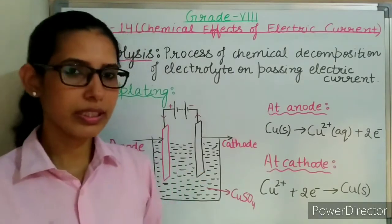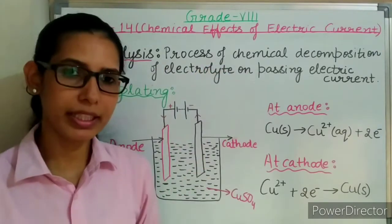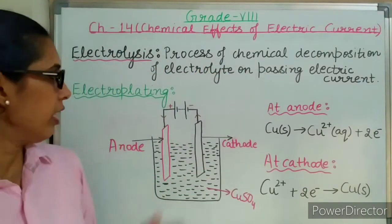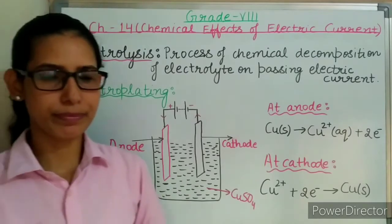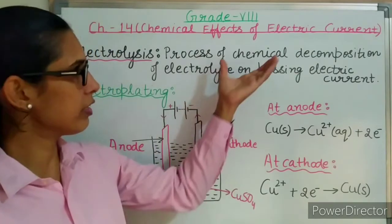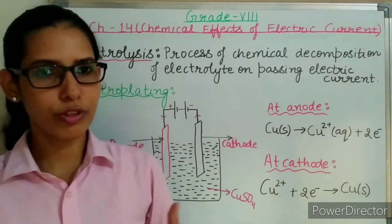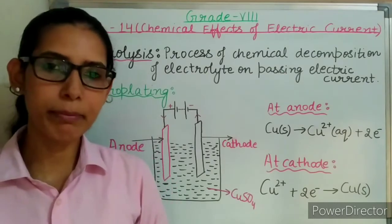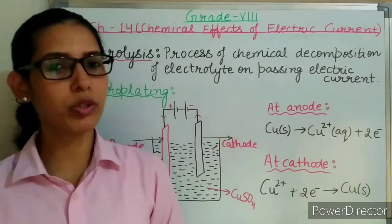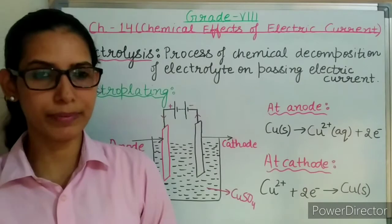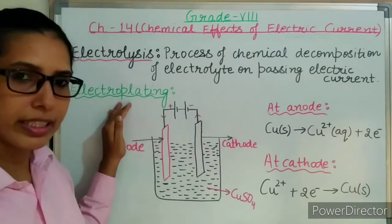This phenomenon of chemical effects of electric current is very useful, like the process of electroplating. It is used for electroplating purposes or for refining metals like silver, gold, etc.